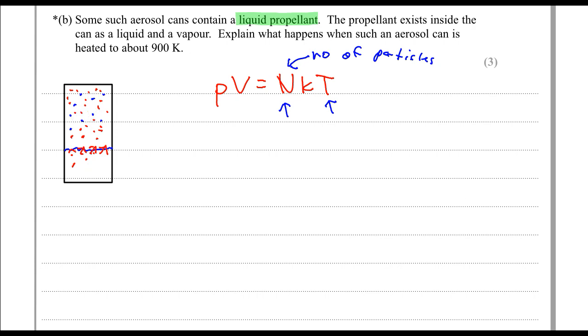So without the liquid propellant, there was only the temperature increase which resulted in the pressure going up. But now, in the ideal gas equation, N is also increasing. So we have another reason for the pressure to go up.